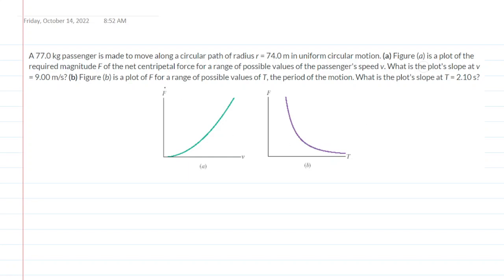In part A of this question, we have a graph of the centripetal force plotted against the speed of this object. We have to figure out the plot's slope when the speed is equal to 9 meters per second.